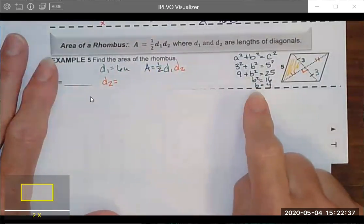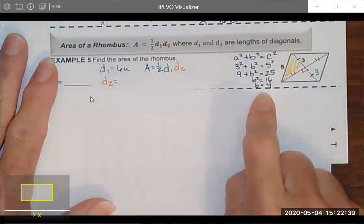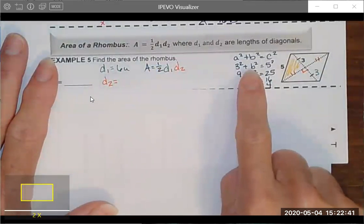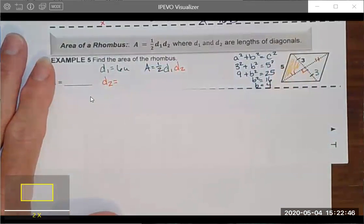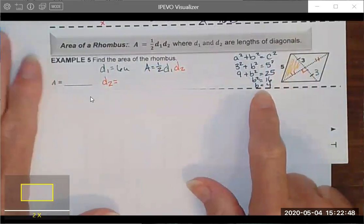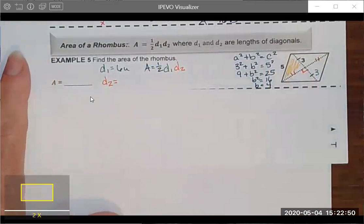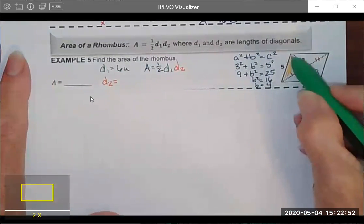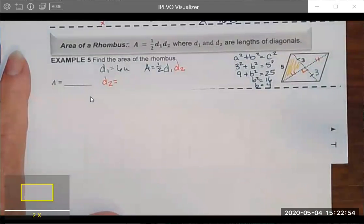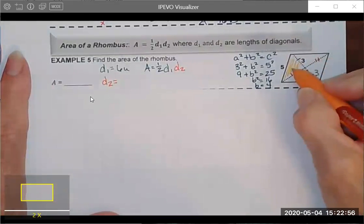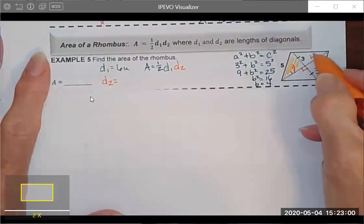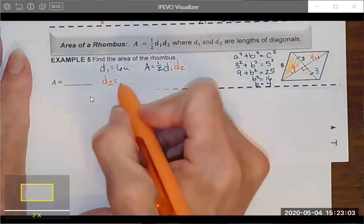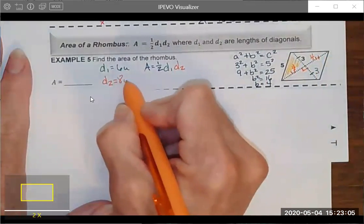But I do have a right triangle so I can use Pythagorean theorem. 3 squared plus the side I don't know b squared equals 5 squared which is the hypotenuse across from the right angle. I solve and I end up with a side of this right triangle as being 4. So if this half of the diagonal is 4 then this one is also 4 making my total diagonal 8 units.